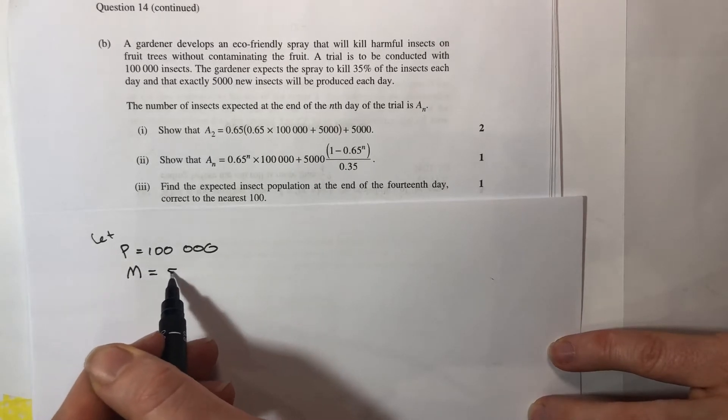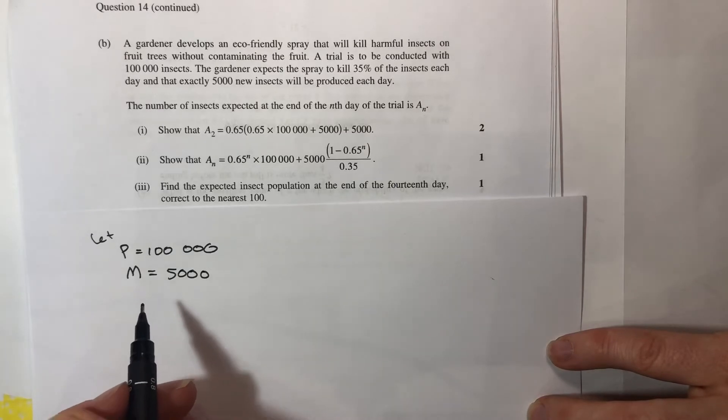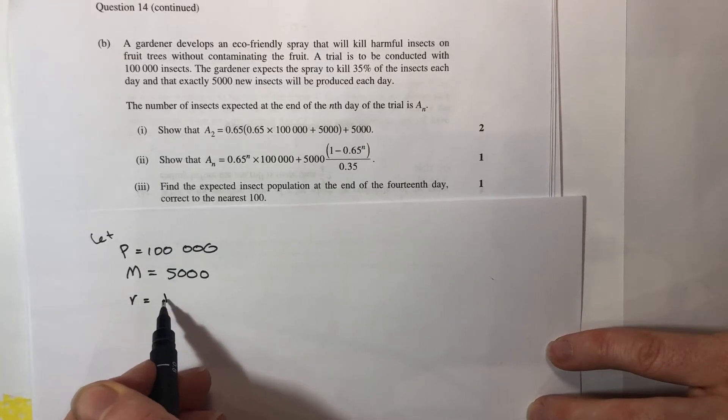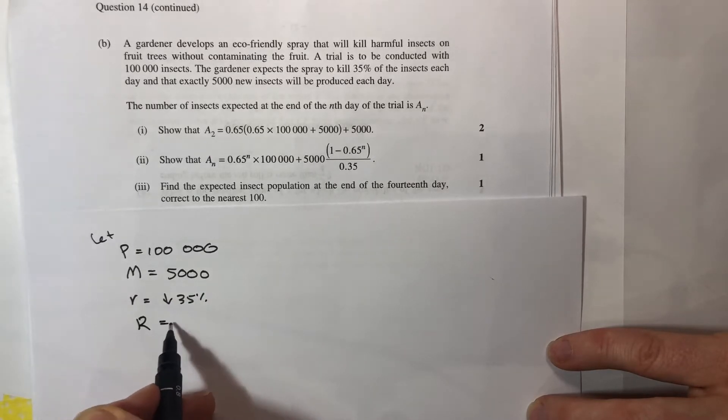My repeating input is actually 5,000 new insects and we're adding it in every time. And our change rate is to go down 35% so I'm going to use my capital R to be 0.65 to represent I'm keeping 65% each time period.